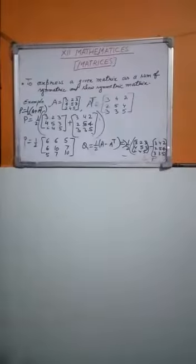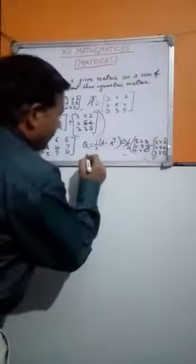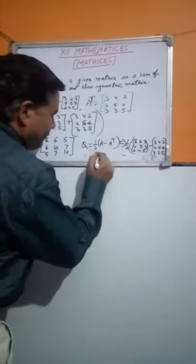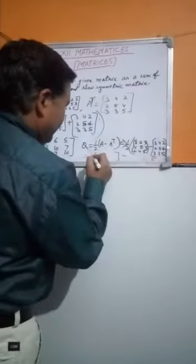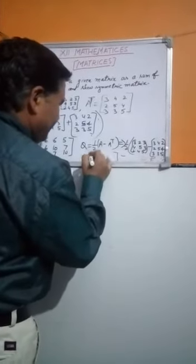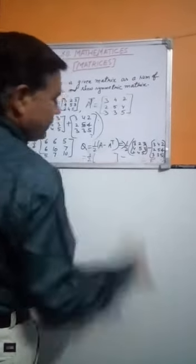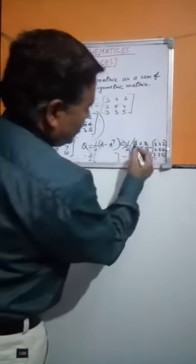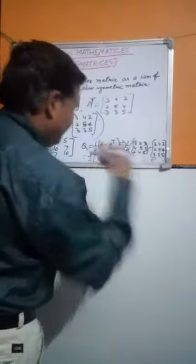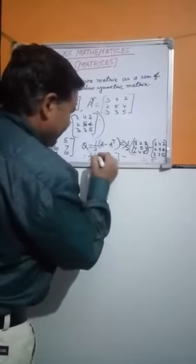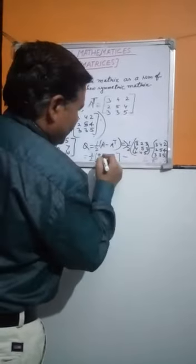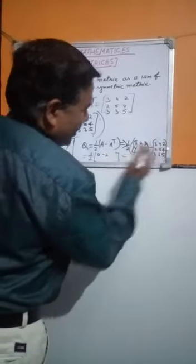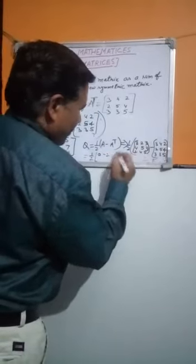So now Q will be half of: three minus three is zero; two minus four is minus two; three minus two is one.